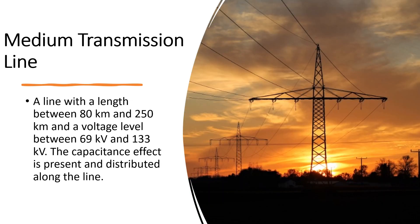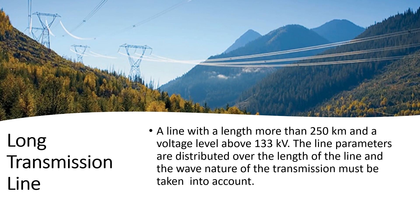A medium transmission line is a line with a length between 80 km and 250 km and a voltage level between 69 kV and 133 kV. The capacitance effect is present and distributed along the line. A long transmission line is a line with a length more than 250 km and a voltage level above 133 kV. The line parameters are distributed over the length of the line and the wave nature of the transmission must be taken into account.